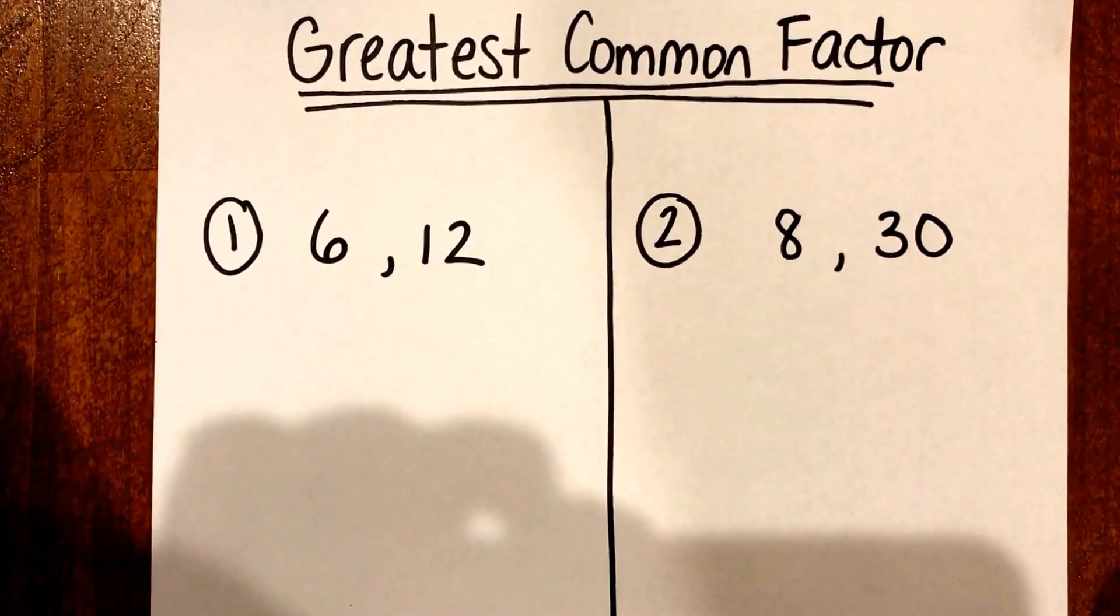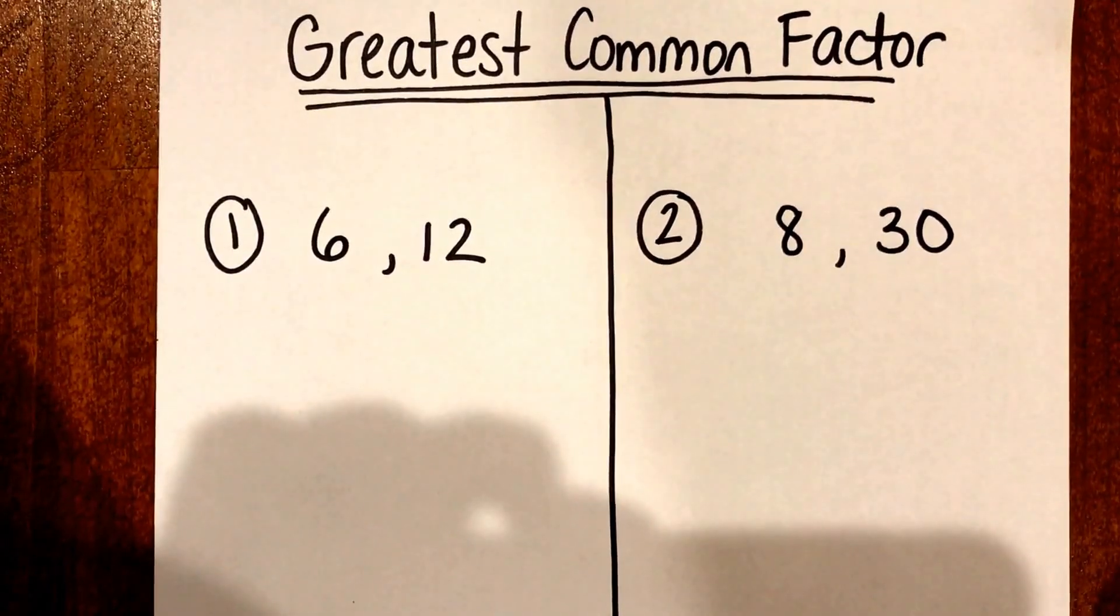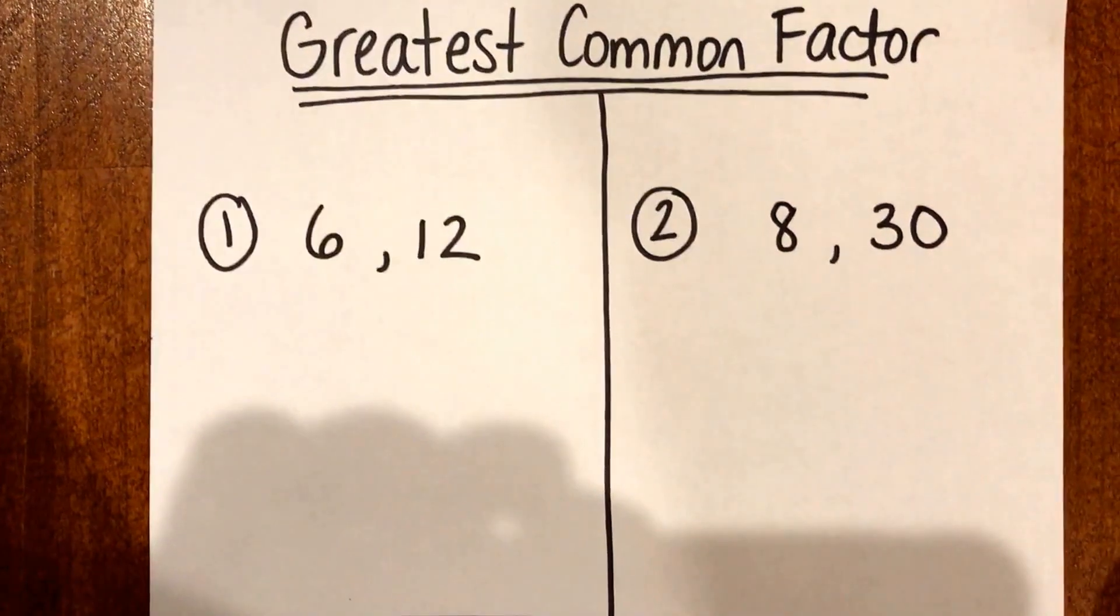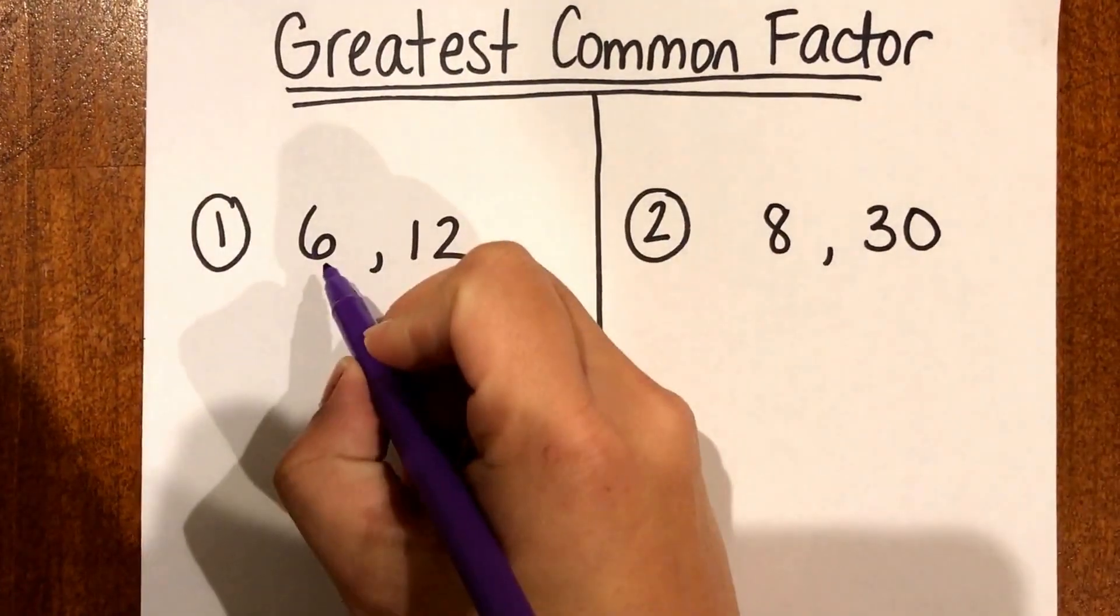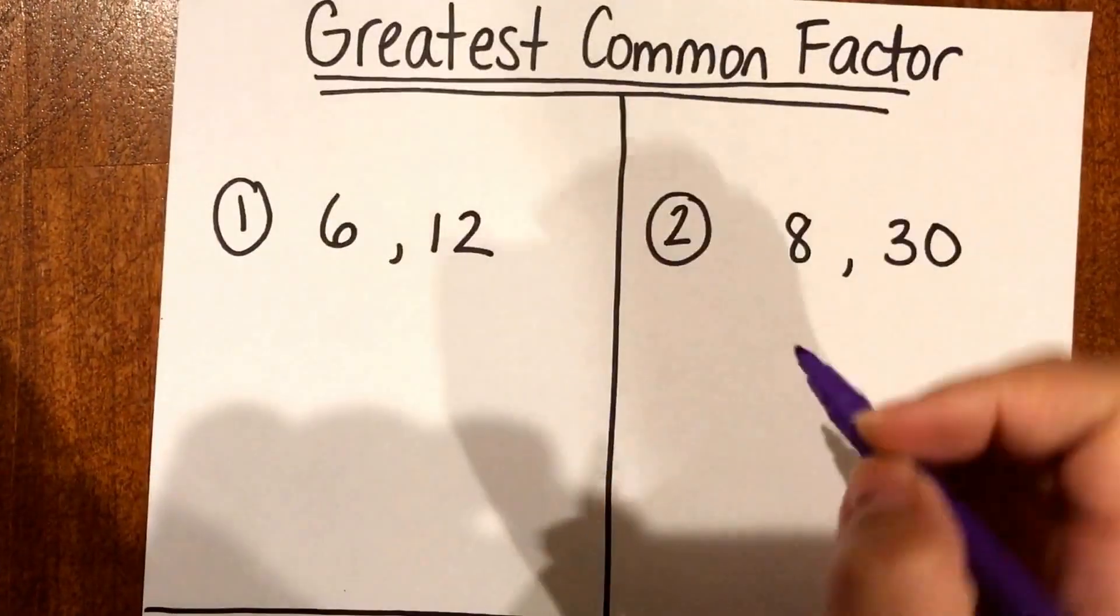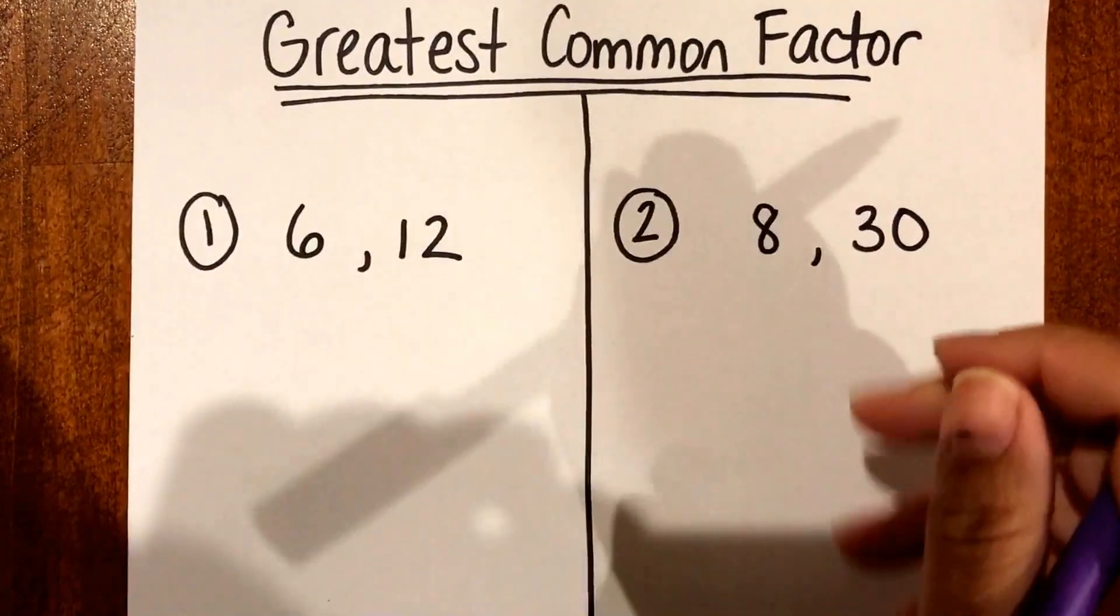In this video I'm going to show you how to find the greatest common factor using the F method. If you look at number 1 we have the numbers 6 and 12 that we're going to try to find the greatest common factor for.